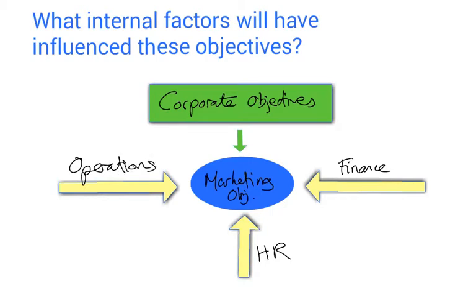We also need to think about operations — specifically things like capacity, production capabilities, and logistics. When Tesco went into online business, that required a whole extra level of distribution logistics, which was a massive operational issue. Although marketing objectives primarily have a marketing focus, they are affected by these functional areas: finance, HR, and operations. Crucially, and this is important for examination answers, the marketing objective should be dictated by the corporate objective. Tesco's corporate objectives, several of which are purely marketing or have marketing elements, should feed into defining the marketing objectives.